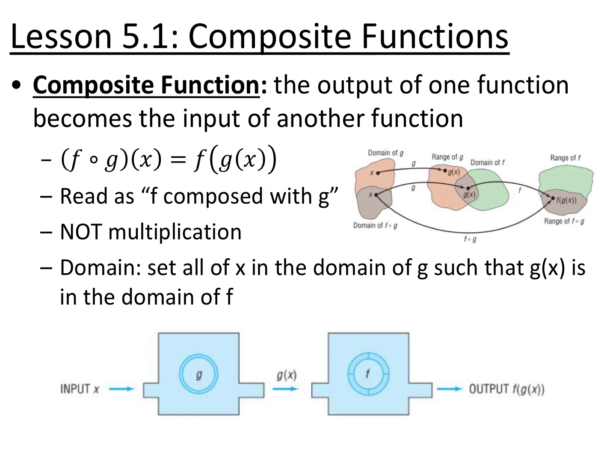The domain of a composite function is the set of all x's that are in the domain of g, such that the outputs g of x are in the domain of f. Essentially it's going to be the domain of the original function, plus once we do our composite, you include the domain of what your final result is.